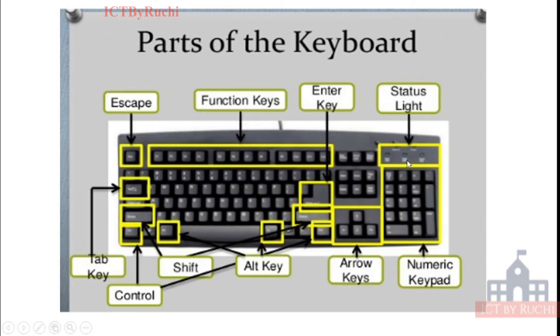Here is a status light. Status light is used like a LED indicator. It shows whether the caps lock, scroll lock, num lock is on or off in a keyboard. Tab key is used to give 5 spaces at a time. Control key: we have control, shift, alt, windows.